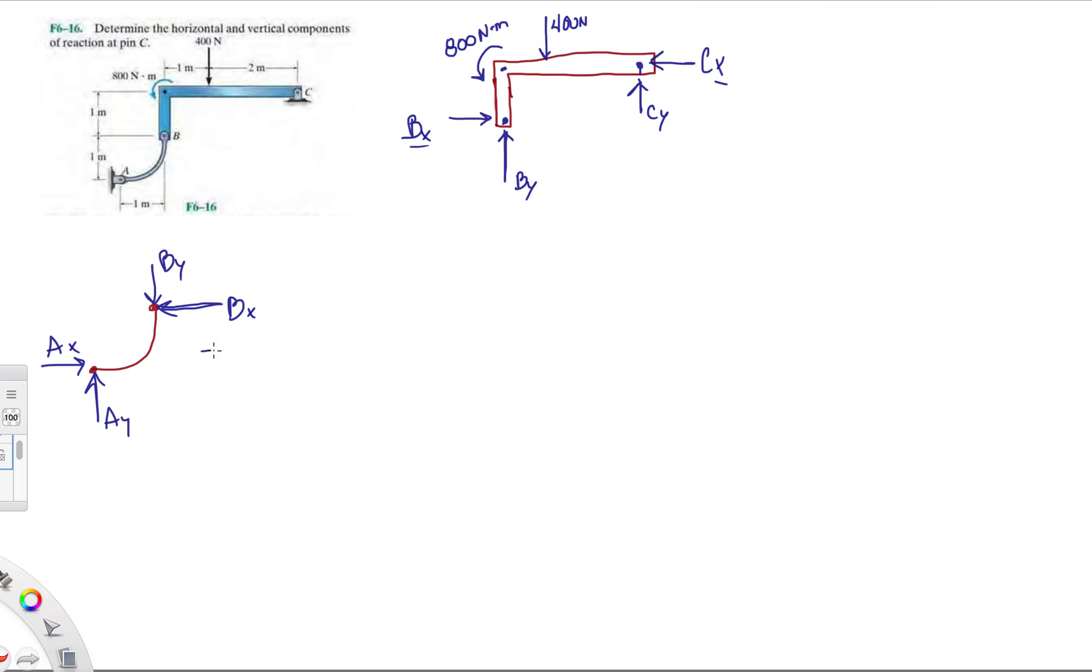If you do the force equations here, the FX and the FY, you end up getting that BX equals AX equals BY equals AY. And if you do the magnitude at the pins, if you do AY over AX, that equals 1, so you end up getting a 45 degree angle.